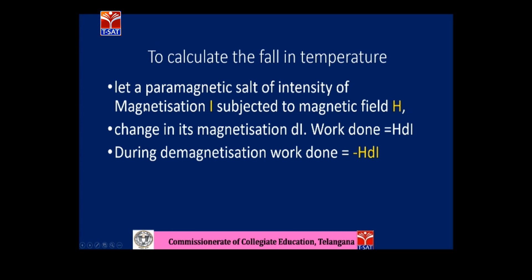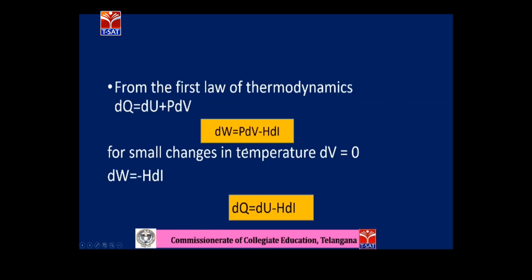Let us calculate the falling temperature during adiabatic demagnetization. Take a paramagnetic salt with intensity of magnetization I, subjected to a magnetic field H. The change in magnetization is dI. The work done during magnetization is H·dI, and during demagnetization the work done is minus H·dI. From the first law of thermodynamics, dQ = dU + P·dV. Since there is no considerable change in volume at these small temperatures, P·dV is taken as zero and dW is taken as minus H·dI, giving dQ = dU − H·dI.